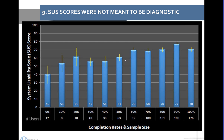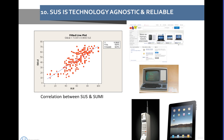While SUS is not meant to be diagnostic, it does correlate with task performance. Generally, as the SUS score goes up, completion rates go up. SUS scores in the 70-some-odd range were associated with completion rates of between 80 and 100%. SUS scores below 70 and 60 are associated with much lower completion rates. It's not a perfect correlation — it's a modest correlation — but it is indicative of task performance.